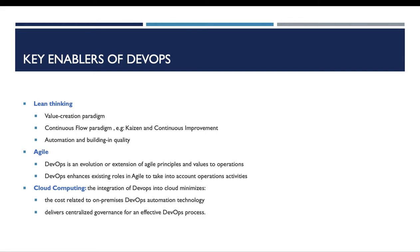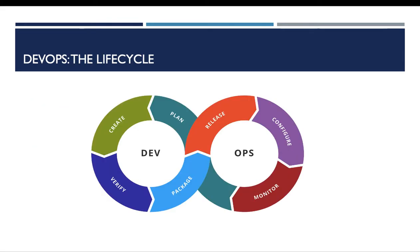Now let's take a look at the lifecycle of DevOps. After planning, the development phase includes the creation, the verification, and the packaging of the build. For the operation phase, it includes the release and the deployment of the release, the configuration after the deployment of the release, and the monitoring of the deployed release.